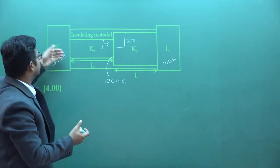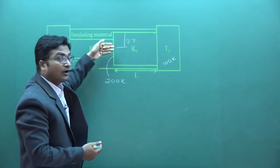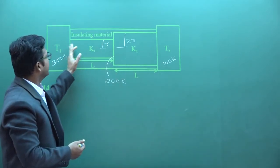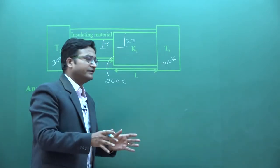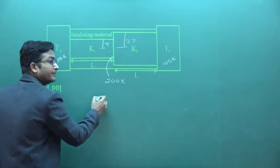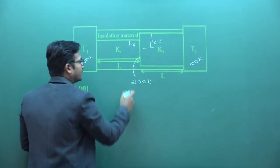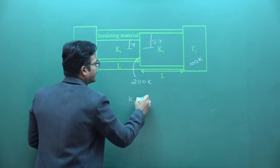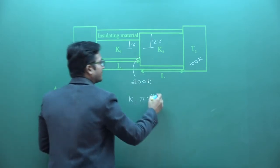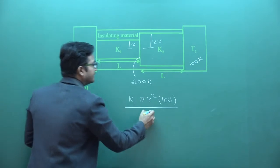The principle is simple: whatever heat comes from the hot end through the first rod must equal the heat going through the second rod — no losses. The heat current formula gives us: for rod 1, it is K1 × πR² × (300 − 200) / L = K1 × πR² × 100 / L. The temperature drop across each rod is 100 Kelvin.